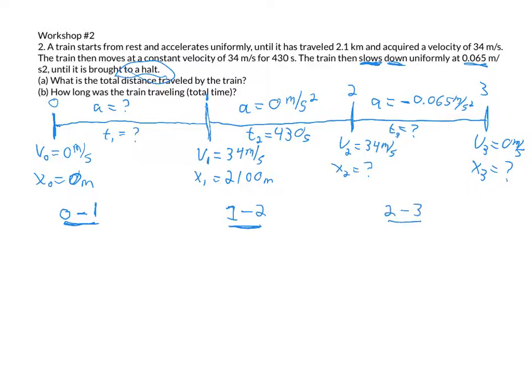Because you're asked to find, ultimately, what is x3, this final distance, which is going to be the 2,100 meters, plus the distance traveled from 1 to 2, which will give you what x2 is, and then plus the distance traveled during the deceleration phase from 2 to 3. And then that gives the total distance traveled over that whole time.